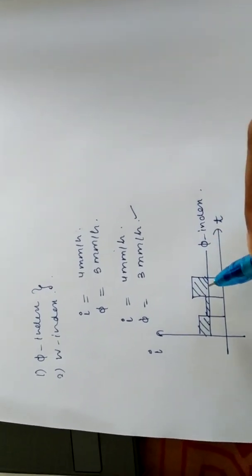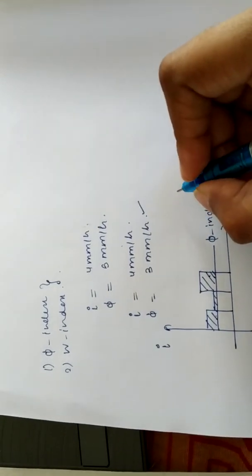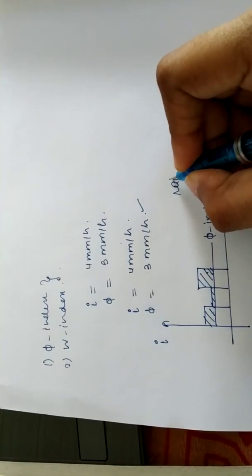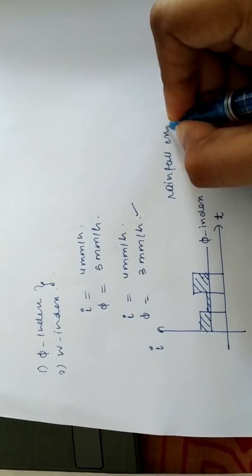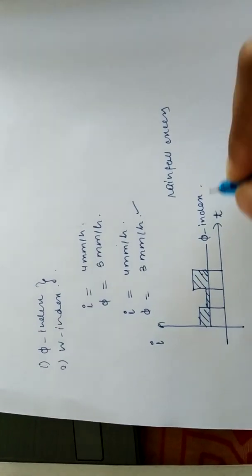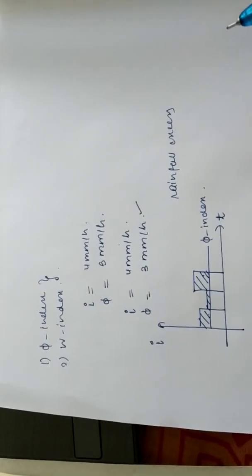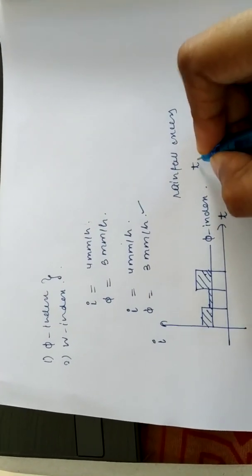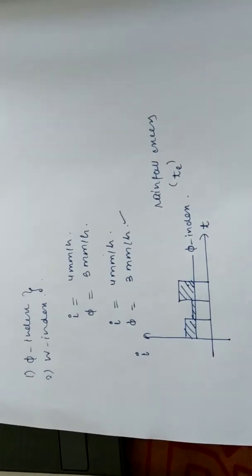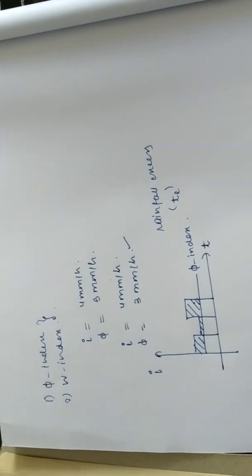Now, the rainfall which contributes to this runoff is called rainfall excess. And the time for which rainfall excess occurs or the time duration for which rainfall will be equal to runoff that will be considered as effective time or time of rainfall excess.